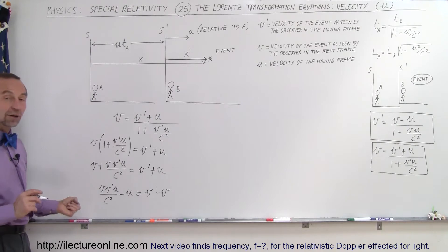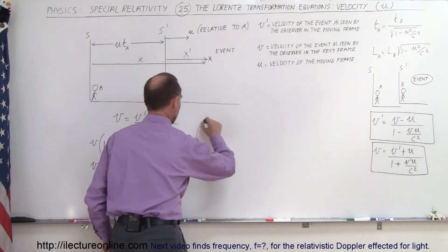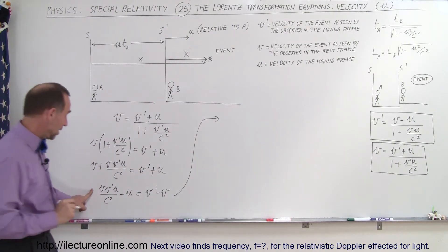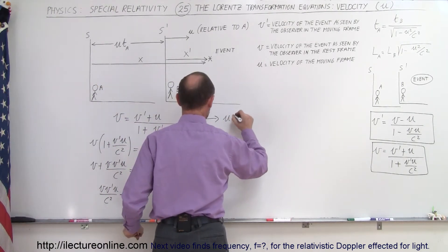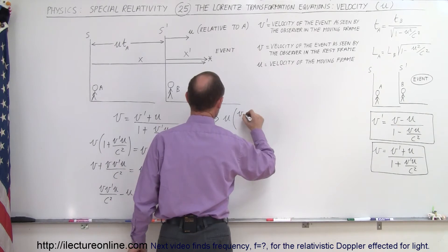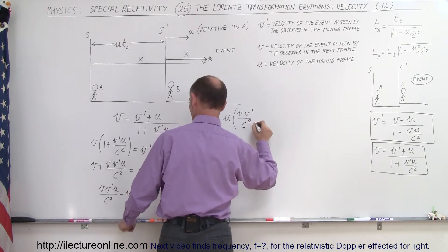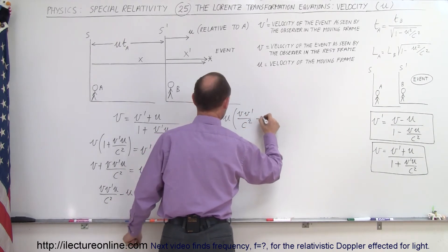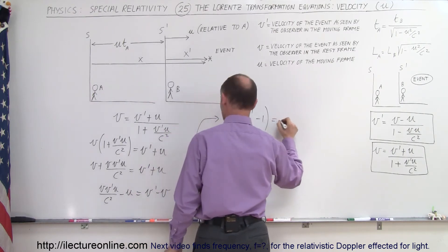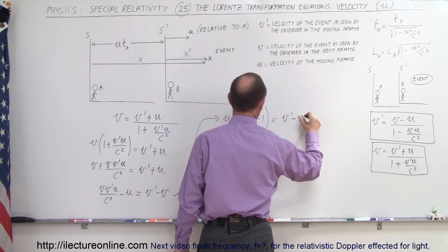Next we factor out u on the left side of the equation, giving us u times the quantity (vv′/c² − 1) equals v′ − v.